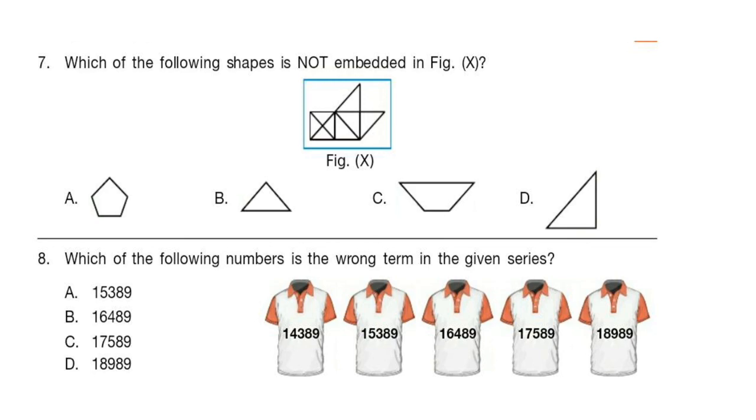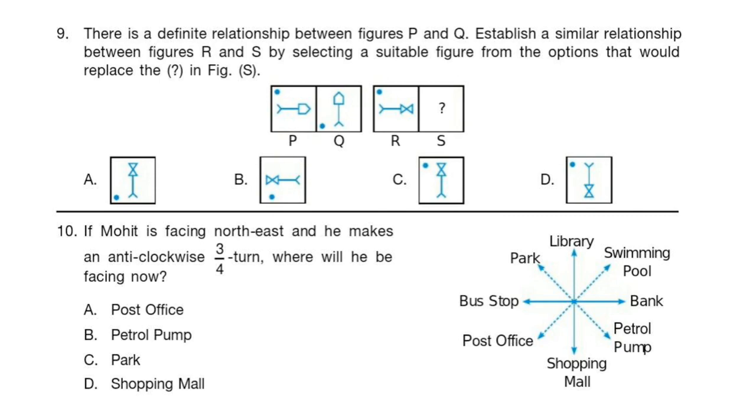Question 8: Which of the following numbers is the wrong term in the given series? Question 9: There is a definite relationship between figures P and Q. Establish a similar relationship between figures R and S by selecting a suitable figure from the options that would replace the question mark in figure S.